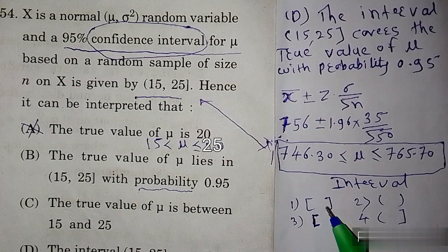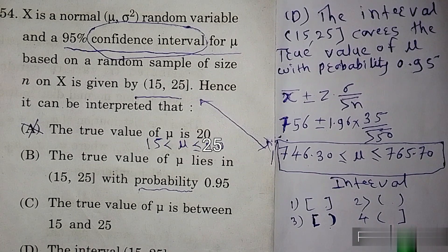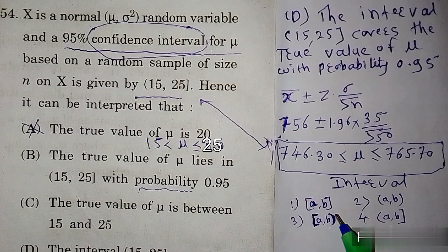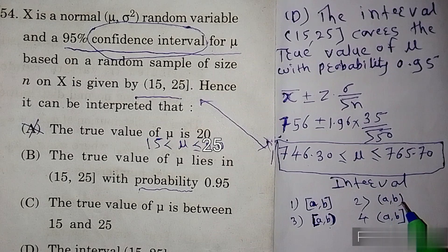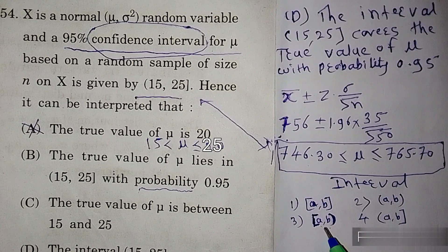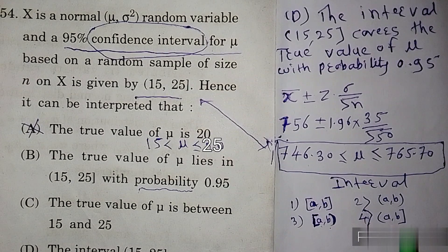Interval के चार type होते हैं: closed interval, open interval, semi-closed, और semi-open। Closed interval का meaning है कि A और B के साथ उनके बीच के भी points involved हैं। Open interval में A और B involved नहीं होंगे लेकिन बीच वाले होंगे। Semi-closed में A involved होगा लेकिन B नहीं; semi-open में A involved नहीं लेकिन B involved होगा।